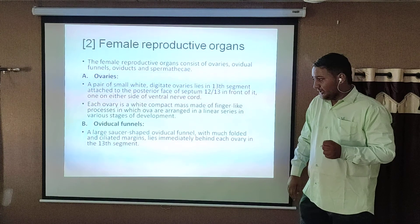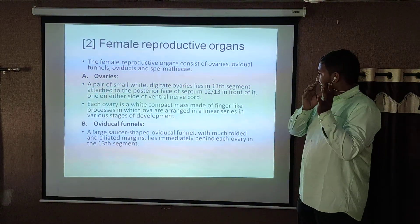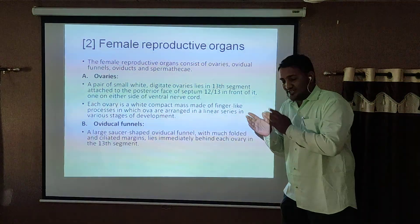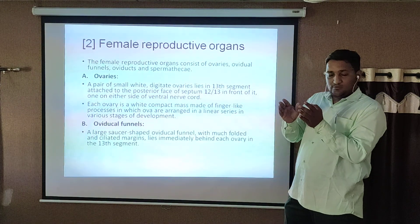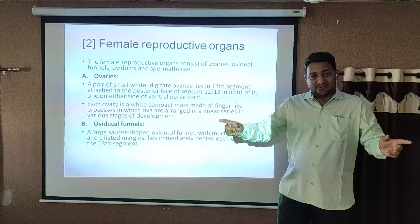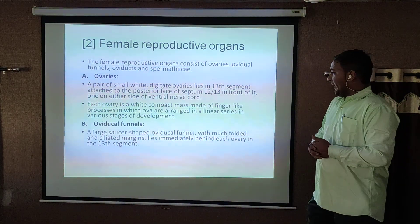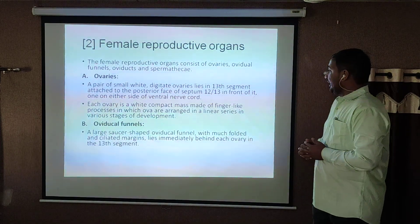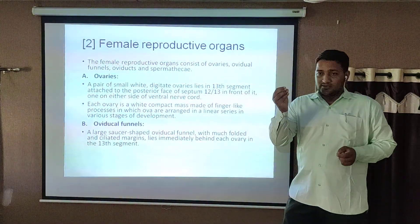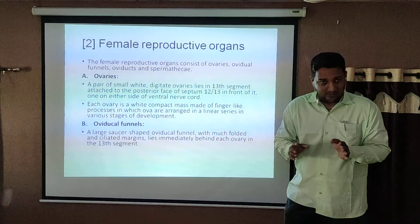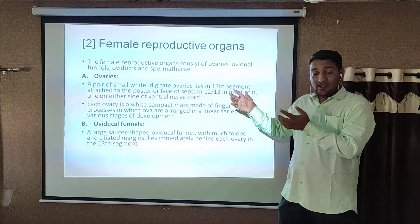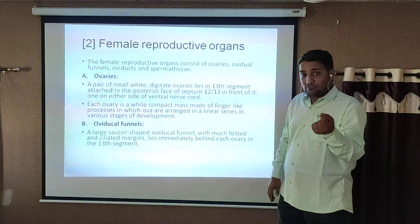The first structure is the ovaries. A pair of small white ovaries lies in the 13th segment, directly attached to the posterior face of the septum between segments 12 and 13, on either side of the ventral nerve cord. Each ovary is a white compact mass made of finger-like processes in which ova are arranged in a linear series at various stages of development. If the ova are large, they are completely developed or mature; if small, they are in a primitive developmental stage.